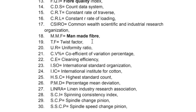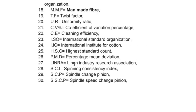More spinning sector abbreviations: CSIRO – Commonwealth Scientific and Industrial Research Organization; MMF – Manmade Fiber; TF – Twist Factor; UR – Uniform Ratio; CV% – Coefficient of Variation Percentage; CE – Clearing Efficiency; ISO – International Standard Organization; ICI – International Institute of Cotton.